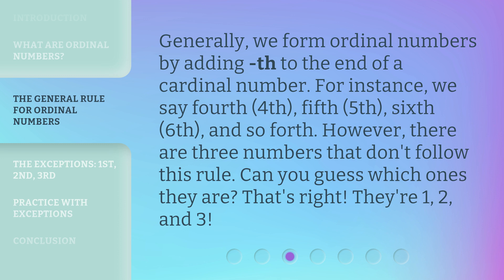Generally, we form ordinal numbers by adding 'th' to the end of a cardinal number. For instance, we say fourth, fifth, sixth, and so forth. However, there are three numbers that don't follow this rule. Can you guess which ones they are? That's right — they're one, two, and three.